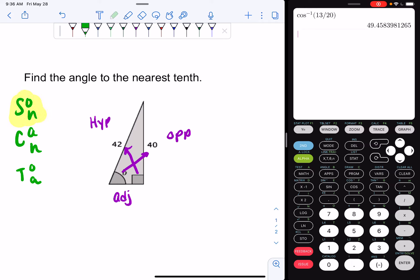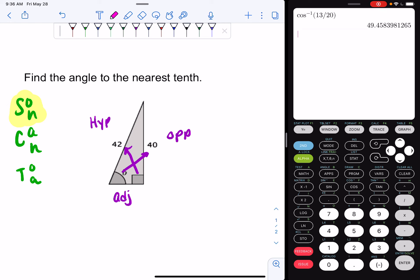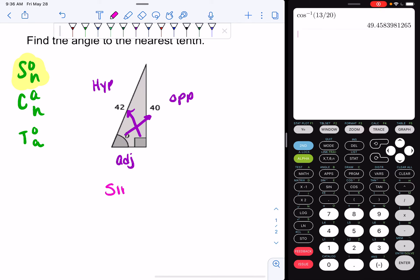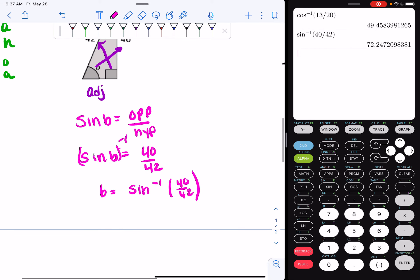So my equation setup is going to be sine of B equals opposite over hypotenuse. We know our opposite is 40 and our hypotenuse is 42. And now I use my inverse trig. So B is equal to inverse sine of 40 over 42. We type that into our calculator. And we get 72.2 degrees. And that's our final answer.